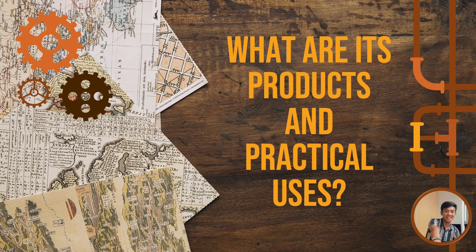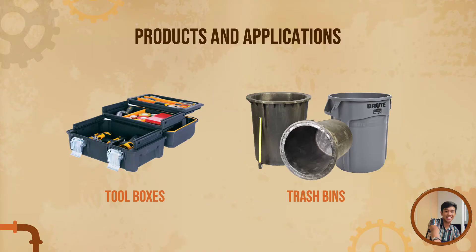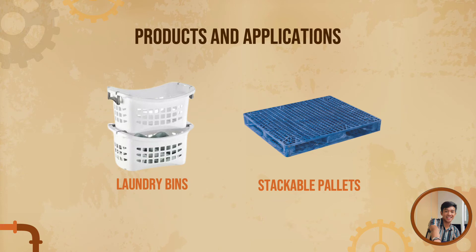So what are its products and practical uses? Some of the products and applications of structural foam molding include toolboxes and trash bins — the image on the left shows the aluminum mold used to produce the trash bin. It also includes laundry bins and stackable pallets, which are commonly found in warehouses.